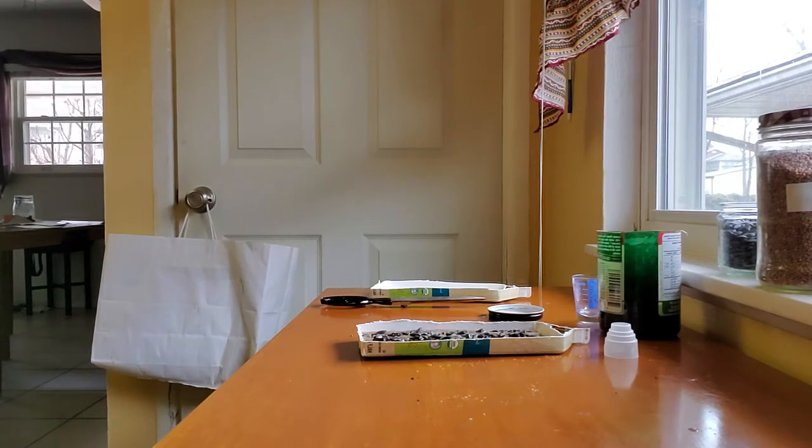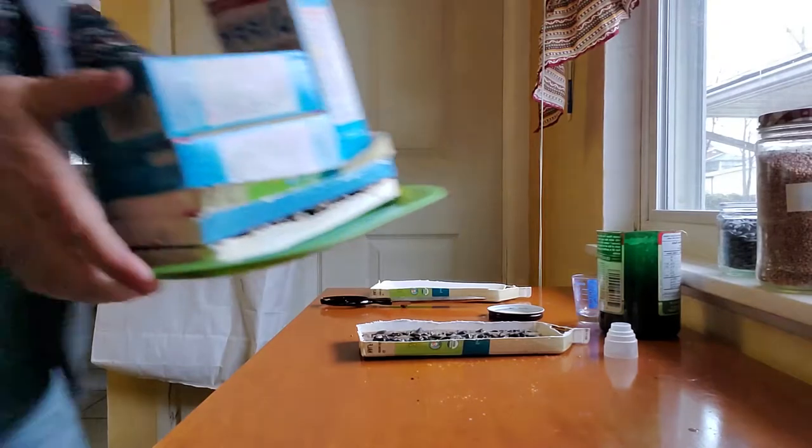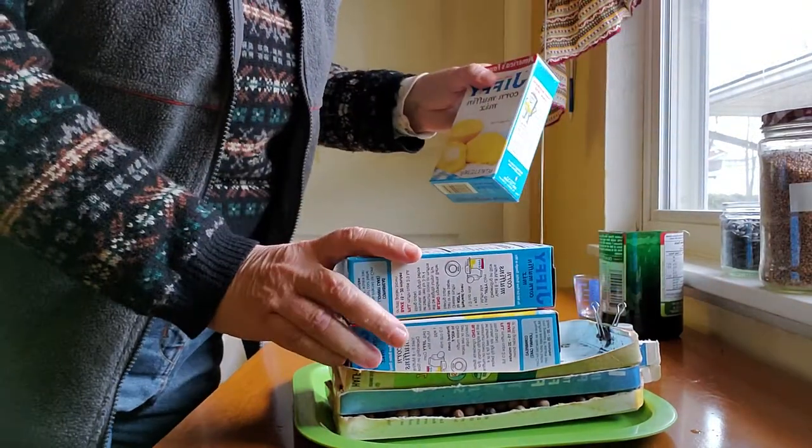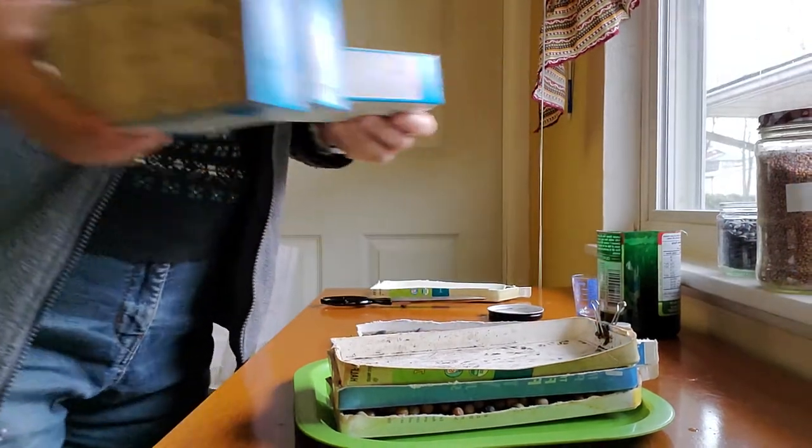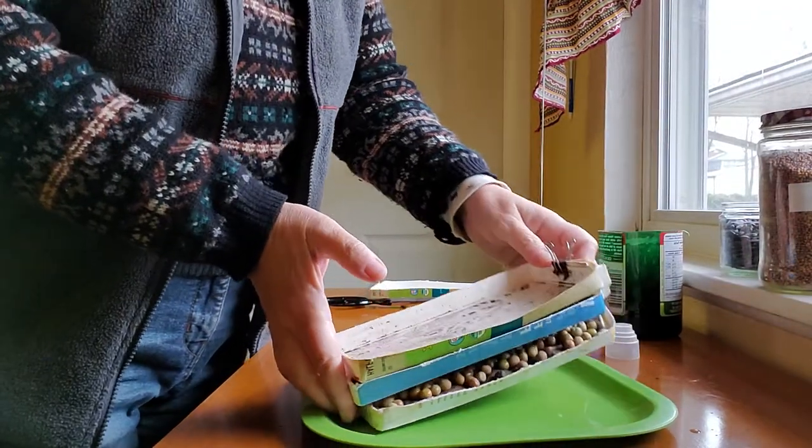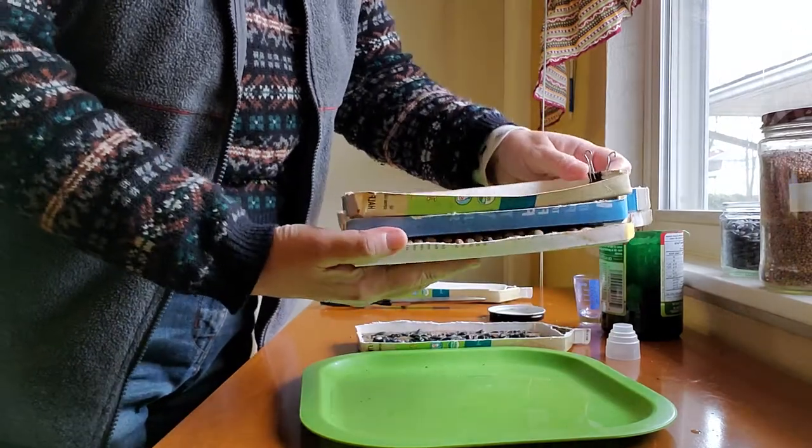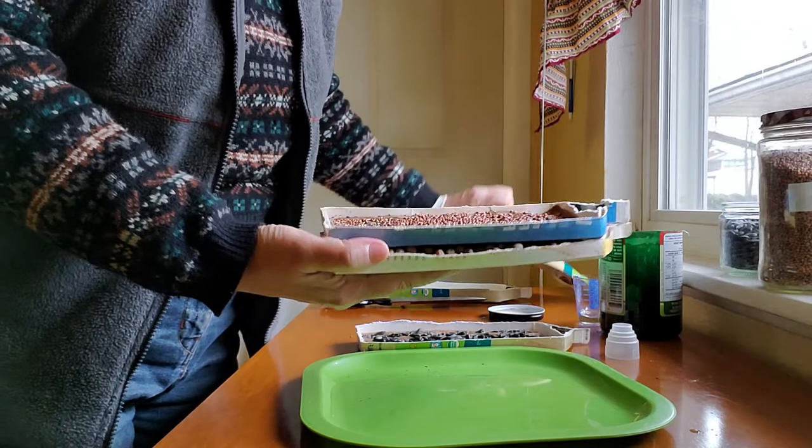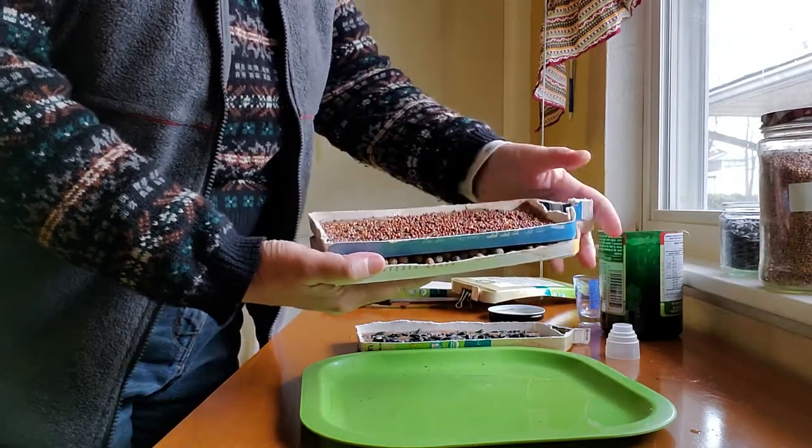Now I have the seeds that I've already started. I have them here, and you see I'm using Jiffy Mix. These are about a half pound each. I'm using those to weight down, and I have a tray on the top. I have some broccoli just starting to sprout.